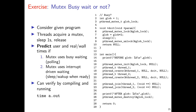The next step is to discuss the semantics and operating system support for mutexes. Consider the following program: in the main thread, we initialize a mutex and create two different threads that are going to compete for it. The main thread simply waits for both those threads to finish and then cleans up.